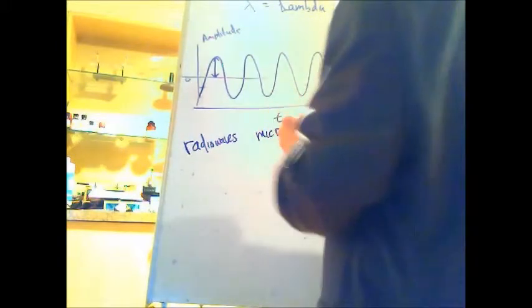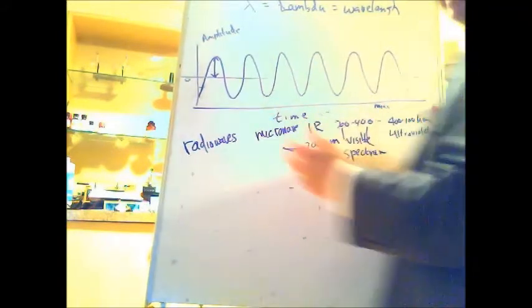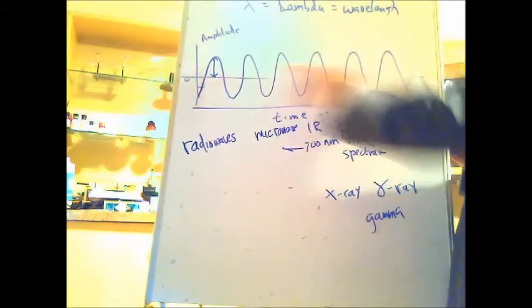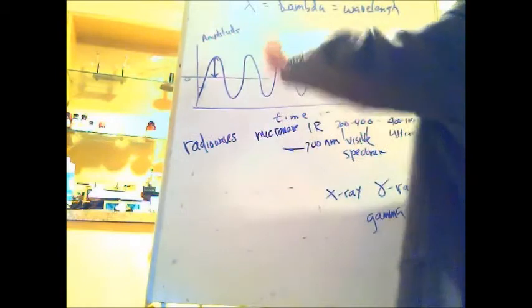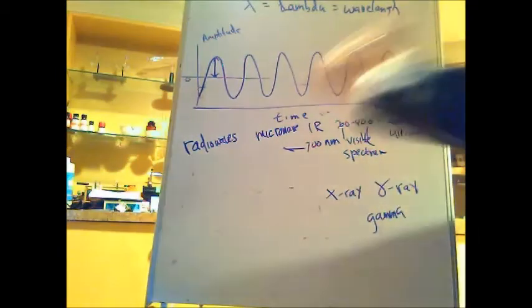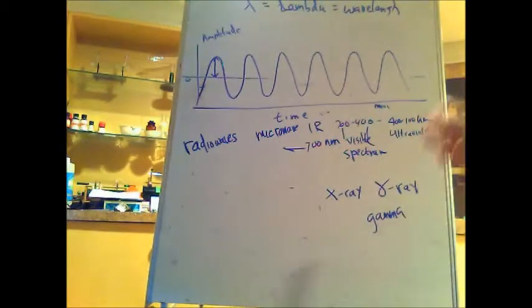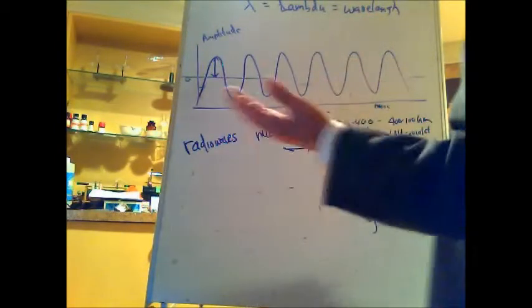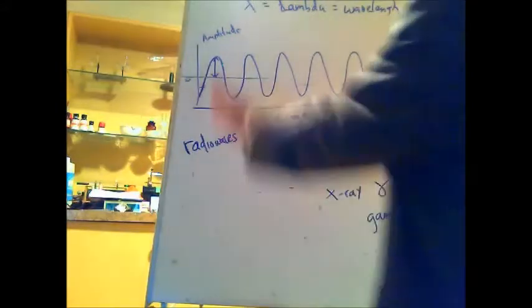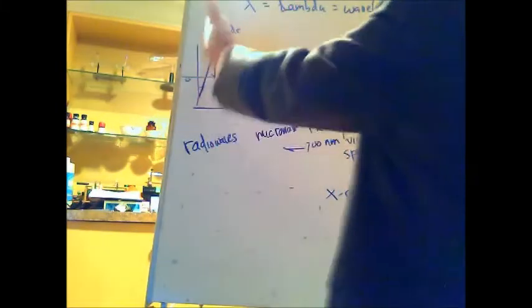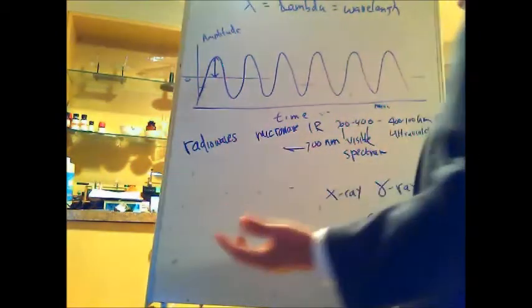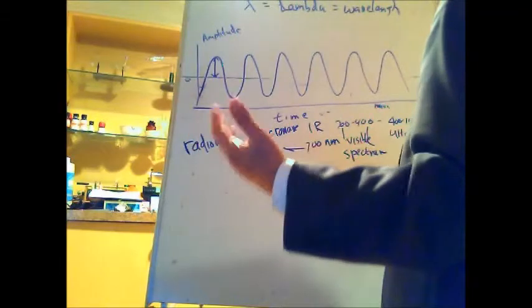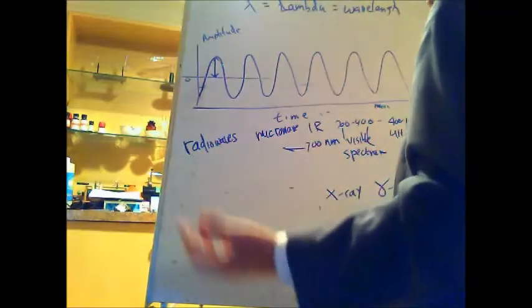Something is vibrating, moving up and down, and that's producing the wave. You can see that same phenomenon if you take a rope, stretch it out, attach it at one end, and shake the rope up and down — you'll see this kind of sine wave being produced. But unlike a rope, which is made out of matter, electromagnetic radiation doesn't need to be attached to anything.